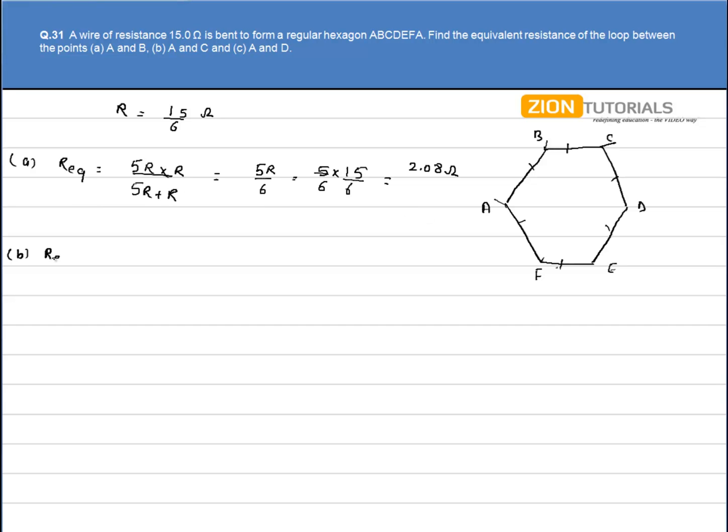So R equivalent is calculated by 2R into 4R divided by 2R plus 4R. So we have 8R by 6 that is 8 by 6 into R that is 15 by 6. On solving this equation, we get the value as 3.33 ohm.